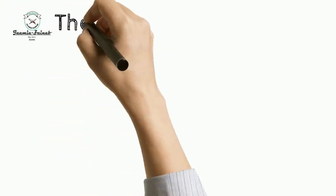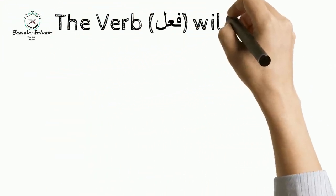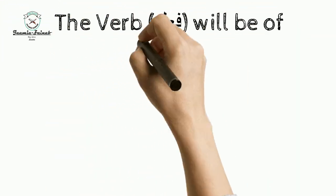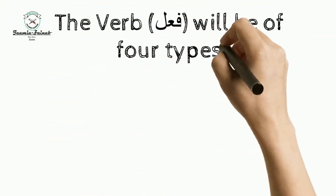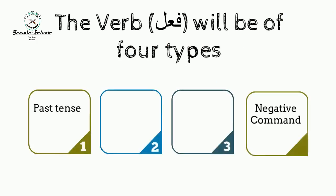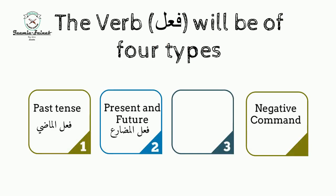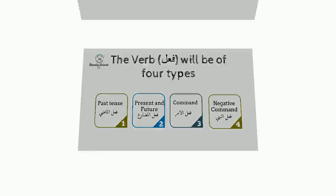Keeping that in mind, we have four types of verbs. One is the past tense — for example, 'she ate.' Two is present and future — for example, 'she is eating' or 'she will eat.' Three is the command — 'eat.' Four is the negative command — 'don't eat.'